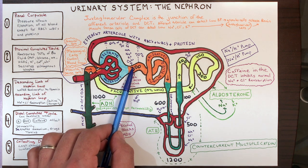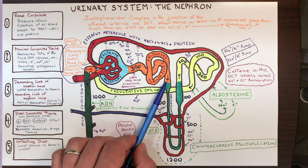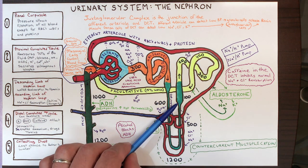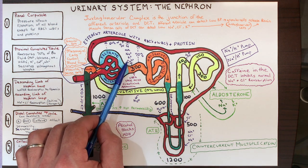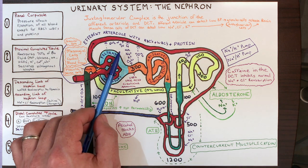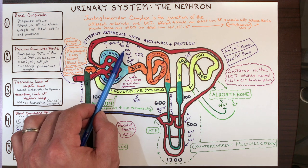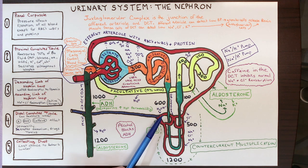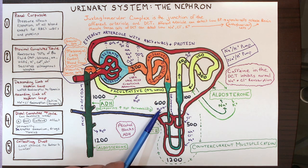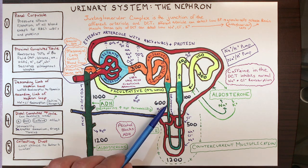The tubular fluid continues on and eventually hits the nephron loop. We have to subdivide this into the descending and ascending limbs because one thing happens in each. In the PCT, many things were reabsorbed — water, calcium, potassium, sodium, amino acids, glucose. In the descending limb, the one key thing I want you to know is water — water is being reabsorbed, leaving the descending limb and going right back to the blood.